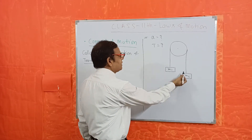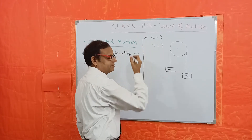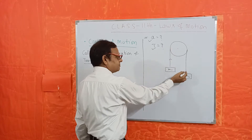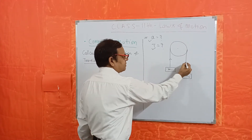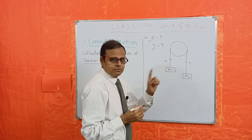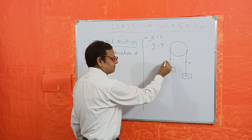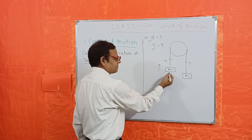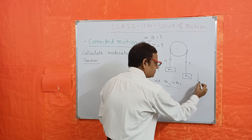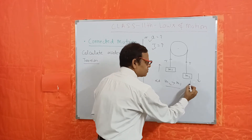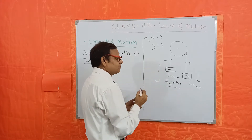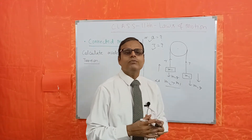Let us consider two masses M1 and M2, tension T, and acceleration A. Since a single string is passing, the tension throughout the string at every point will be constant — let that tension be T. Let M2 be bigger than M1; then automatically M2 will come down and M1 will go up, because M2g is the weight acting on M2 and M1g is the weight acting on M1, both vertically downward.